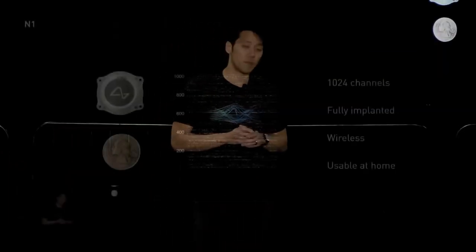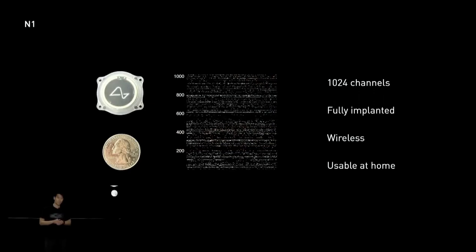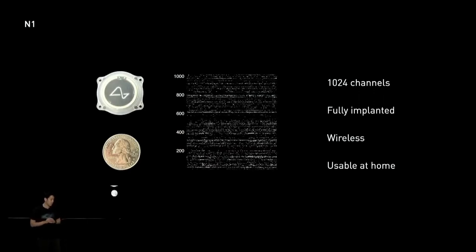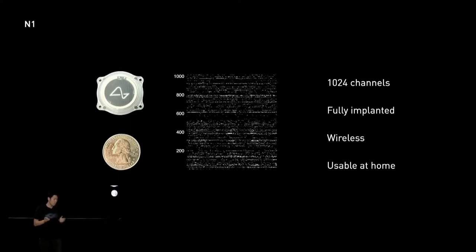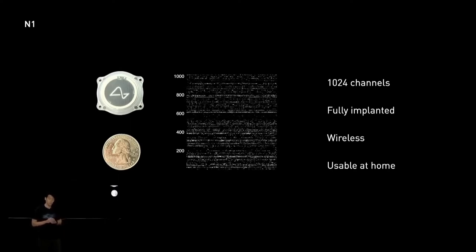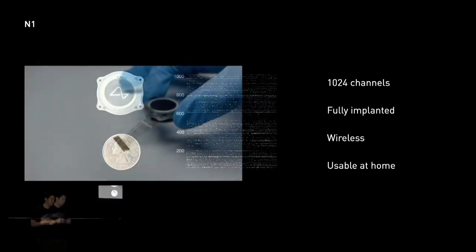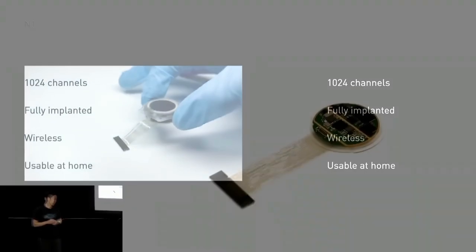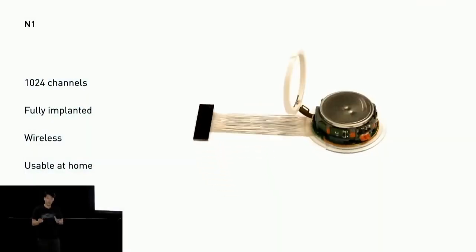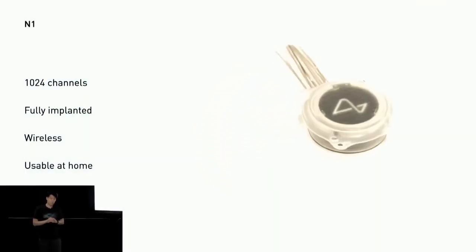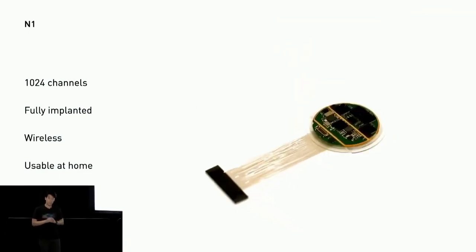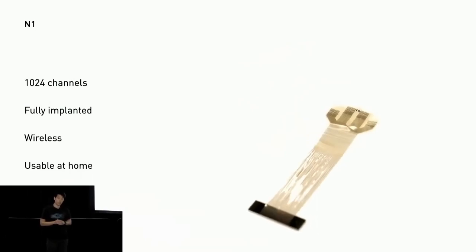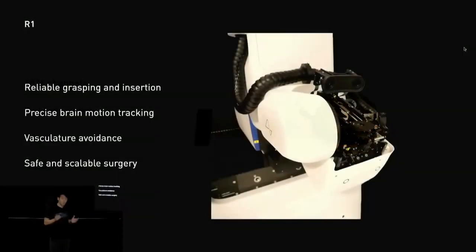So our first steps along these dimensions is what we call the N1 implant. It's the size of about a quarter and it has over 1,000 channels that are capable of recording and stimulating, microfabricated on a flexible thin film arrays that we call threads. It's fully implantable and wireless. No wires and after the surgery, the implant is under the skin and it is invisible. It also has a battery that you can charge wirelessly and you can use it at home.